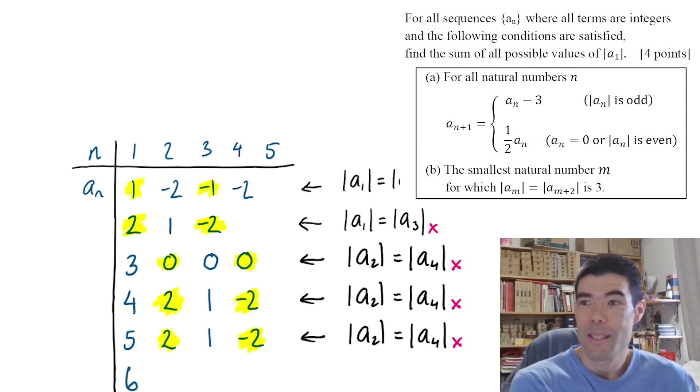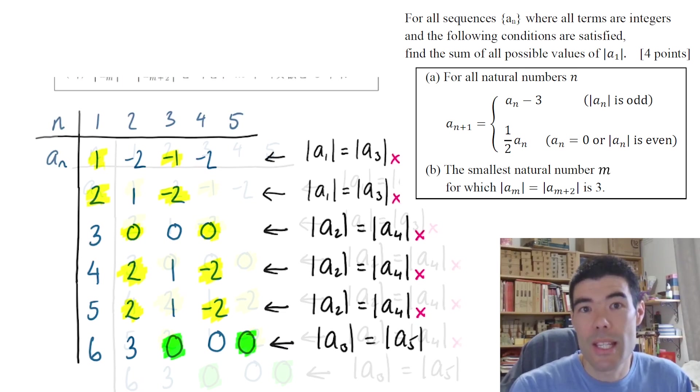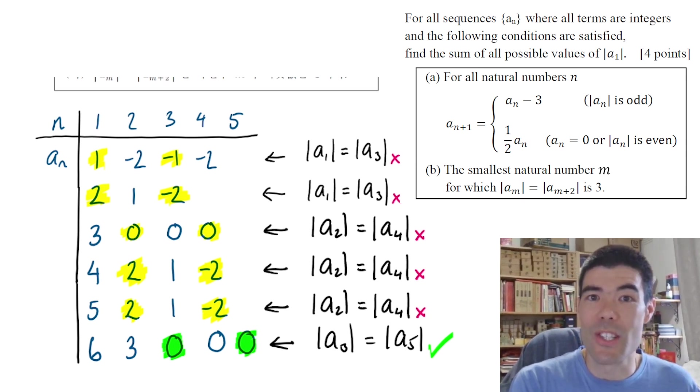When we try 6, divide by 2 to get 3, subtract 3 to get 0, divide by 2, 0, divide by 2, 0. Finally, we have one that works. a_3 and a_5 are equal in absolute value. It was not the case for a_1 or a_2. So this sequence is the first one that actually meets both conditions.